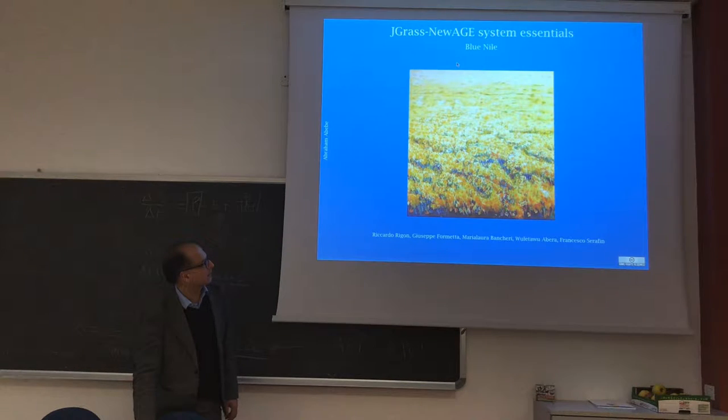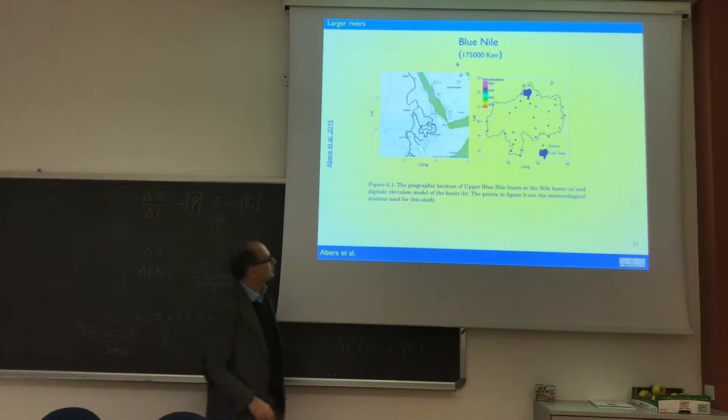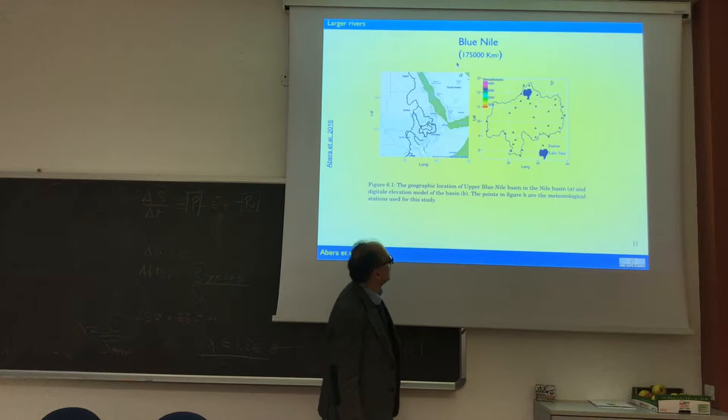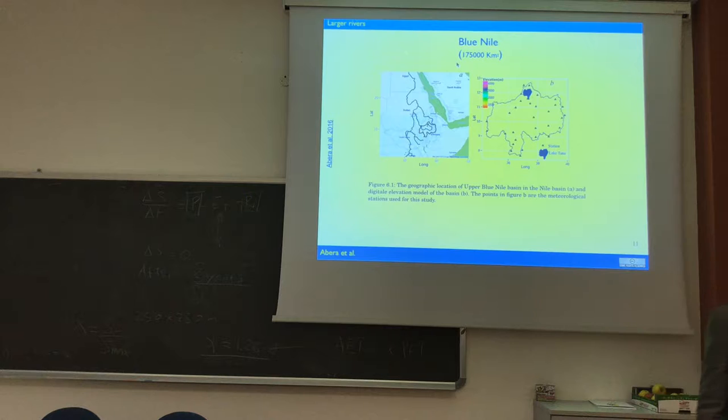Second case is completely different for size and the climate. It's the Blue Nile. I already talked about Blue Nile. This is 170,000 square kilometers. It's in Ethiopia.